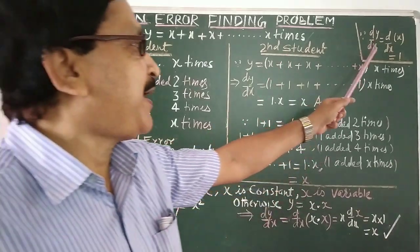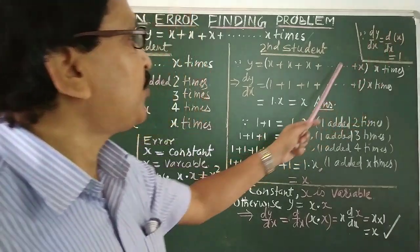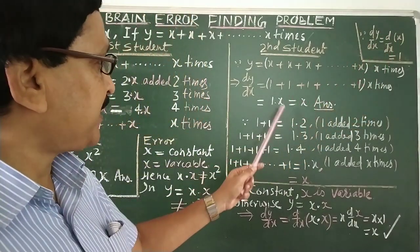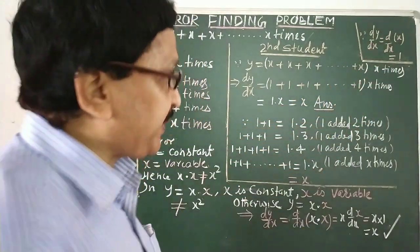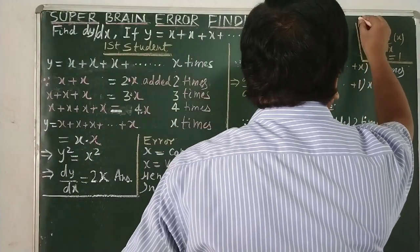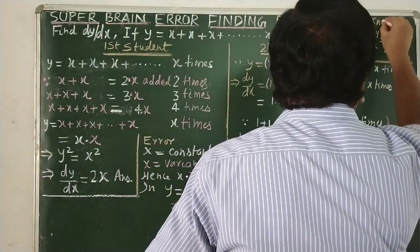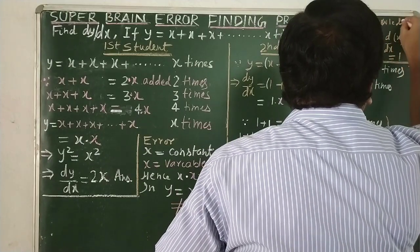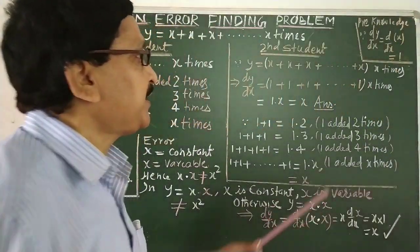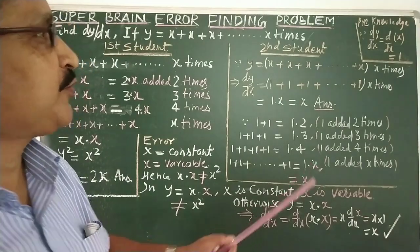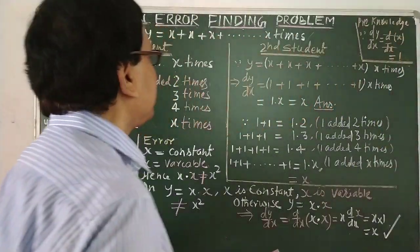Knowing dy/dx — put the value of y. This could be pre-knowledge for you: that dy/dx of x is always equal to one, since both cancel each other, so one is the result.